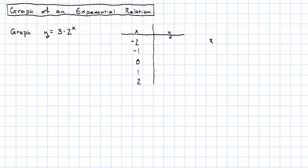So we'll have 3 times 2 to the negative 2, 3 times 2 to the negative 1, 3 times 2 to the 0, 3 times 2 to the 1, 3 times 2 to the 2.